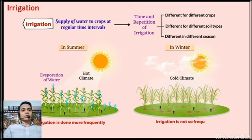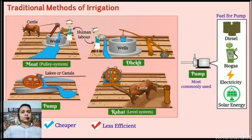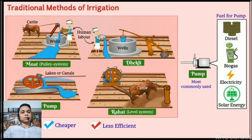In summer, the frequency of watering is higher. Why? It could be due to the increased rate of evaporation of water from the soil and leaves. The sources of water for irrigation are wells, tube wells, ponds, lakes, rivers, dams, and canals. Traditional methods of irrigation: the water available in wells, lakes, and canals is lifted by different methods in different regions. Cattle or human labor is used in these methods, so they are cheaper but less efficient. The various traditional ways are the Mod pulley system, chain pump, Dhekli, and Rahat layer system. Pumps are commonly used for lifting water, powered by diesel, biogas, electricity, or solar energy.